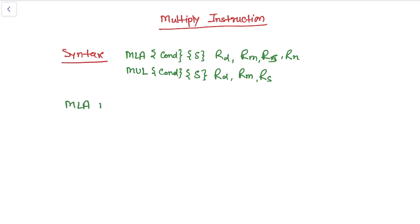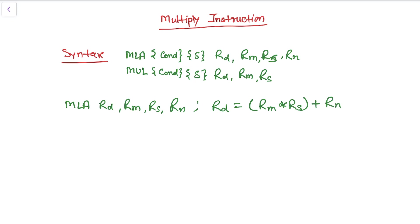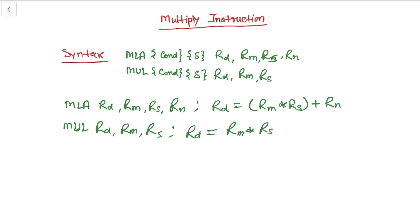If we write MLA RD, RM, RS, RN — that means it will put the result into the RD register, multiply RM and RS, and then add the RN register. If we write MUL RD, RM, RS — it will once again put the result into the RD register and multiply the registers RM and RS.